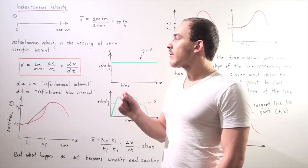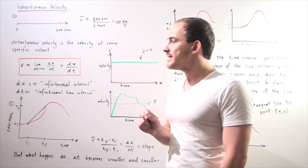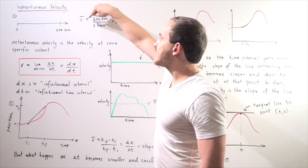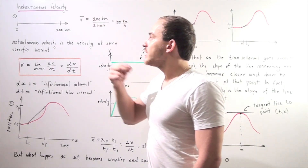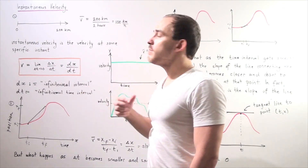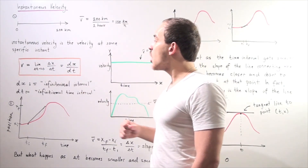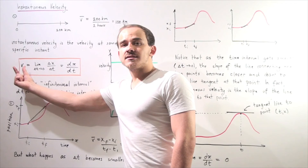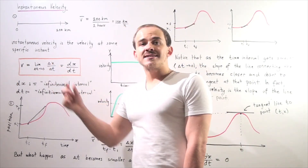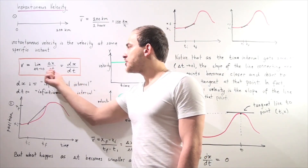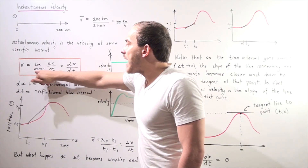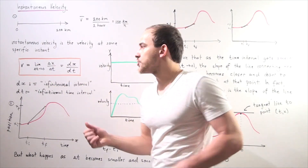The formula for instantaneous velocity is given by the following equation. Notice that average velocity has a V with a bar on top, while instantaneous velocity — or simply velocity — has no bar. This bar means average. So instantaneous velocity, or velocity, is equal to the ratio of our change in x, our displacement, divided by change in t, our time — taken as the limit as our change in t approaches zero.